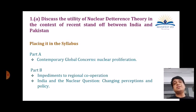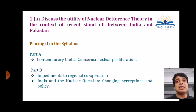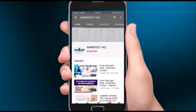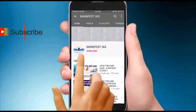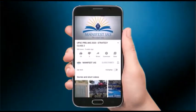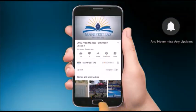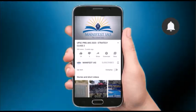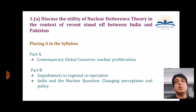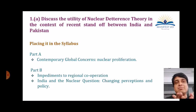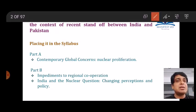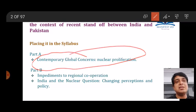Let us start the discussion. The first question is: 'Discuss the utility of nuclear deterrence theory in the context of the recent standoff between India and Pakistan.' Let us place it in the syllabus — it is in Part A of paper two, under the topic contemporary global concerns, specifically nuclear proliferation.